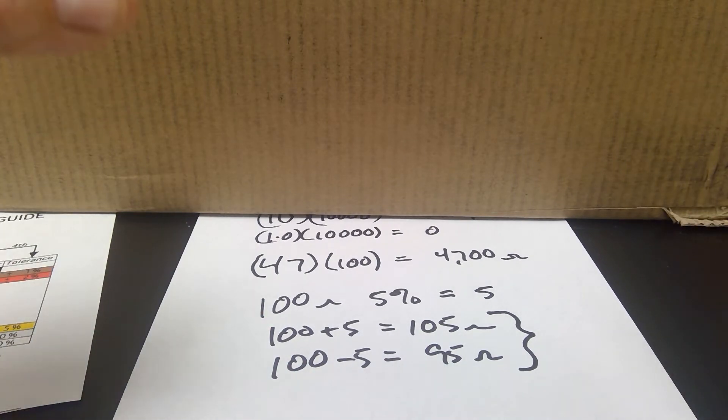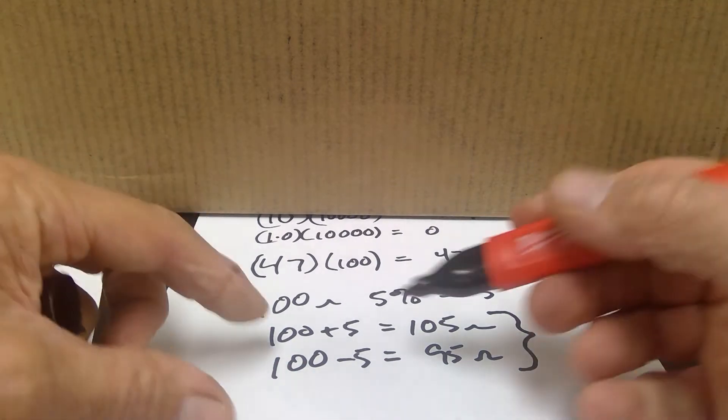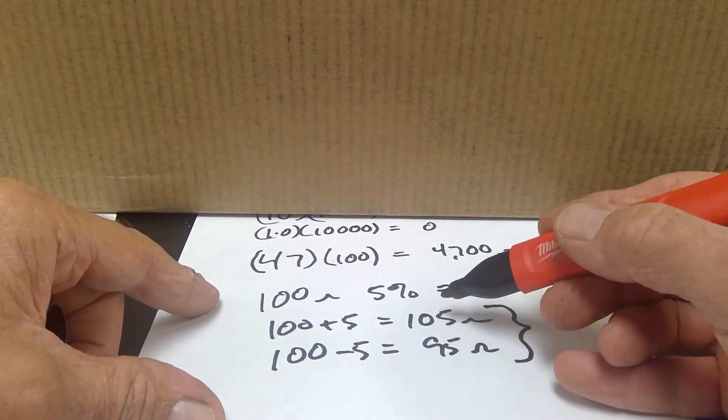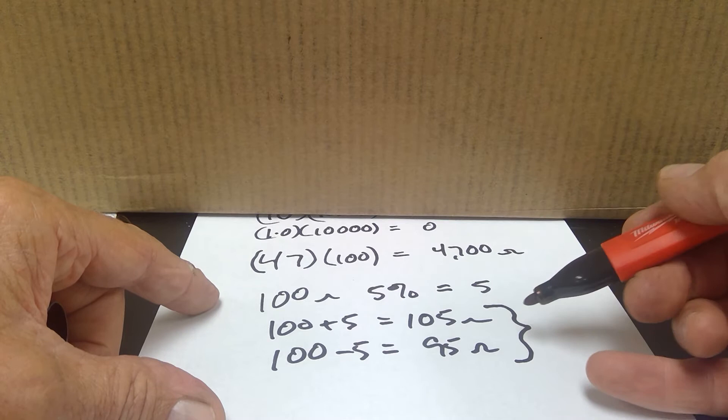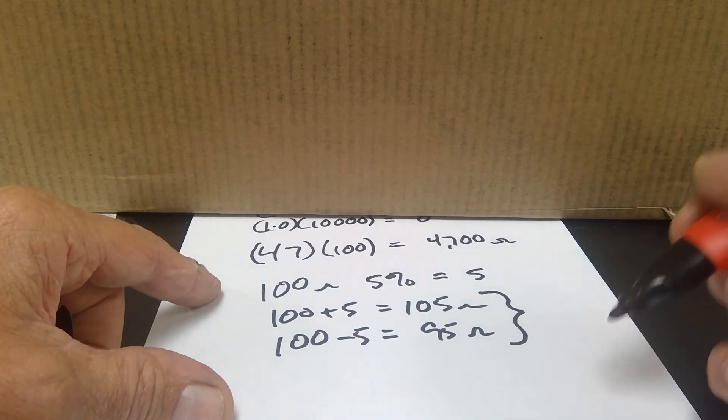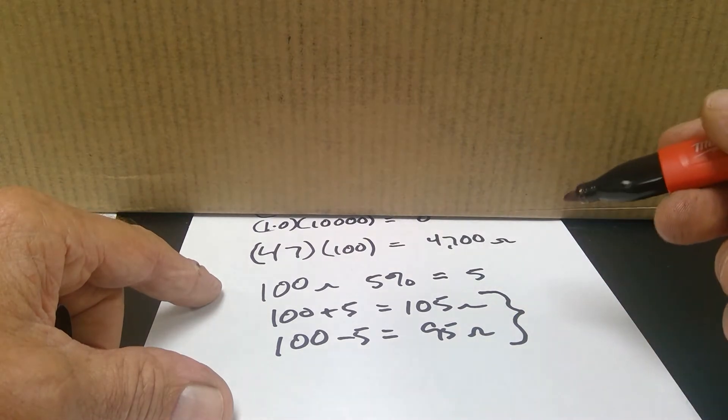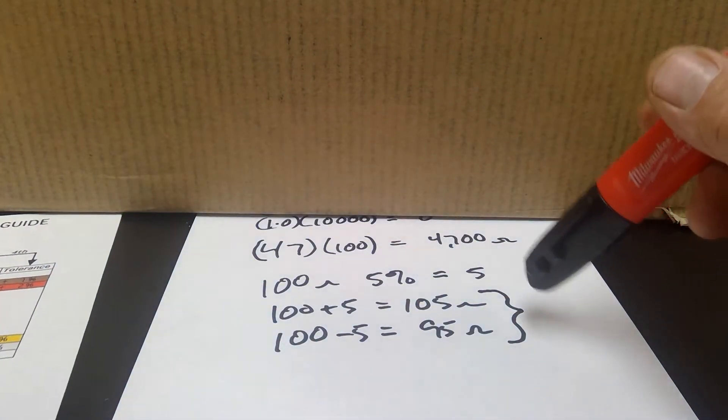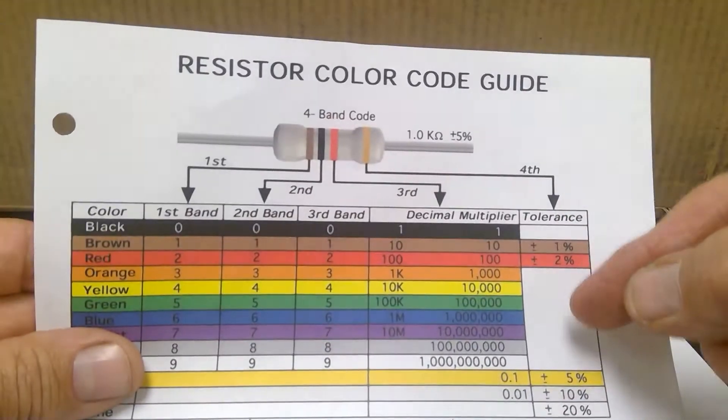This range right here is where my measured value has to be. In other words, if I take a meter and I measure that 100-ohm resistor, if it's between 95 and 105 ohms, it's good. But if it was 93 ohms or 107 ohms, it's out of range. And that can impact the way that the circuit works. So that's what the tolerance band is all about.